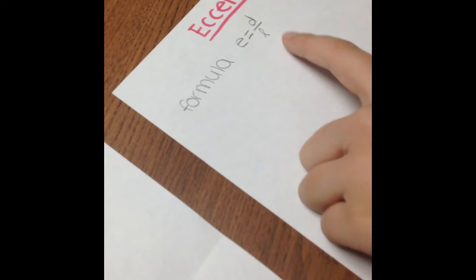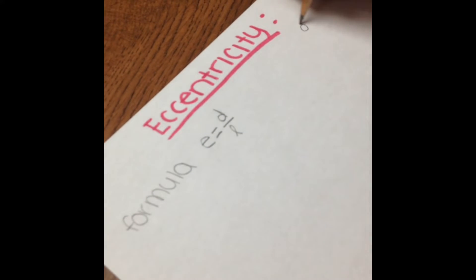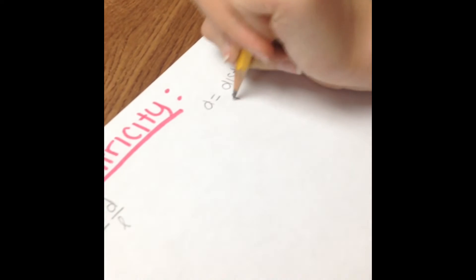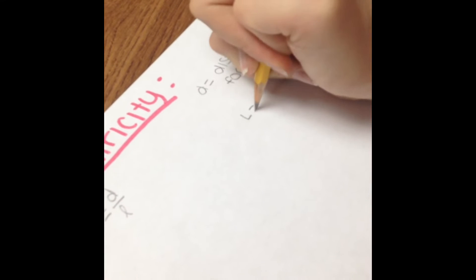After we have finished drawing our ellipse we will find the eccentricity of it. The formula for eccentricity is E equals D over L. D is going to equal our distance between the two foci. L is going to equal the length of the major axis.